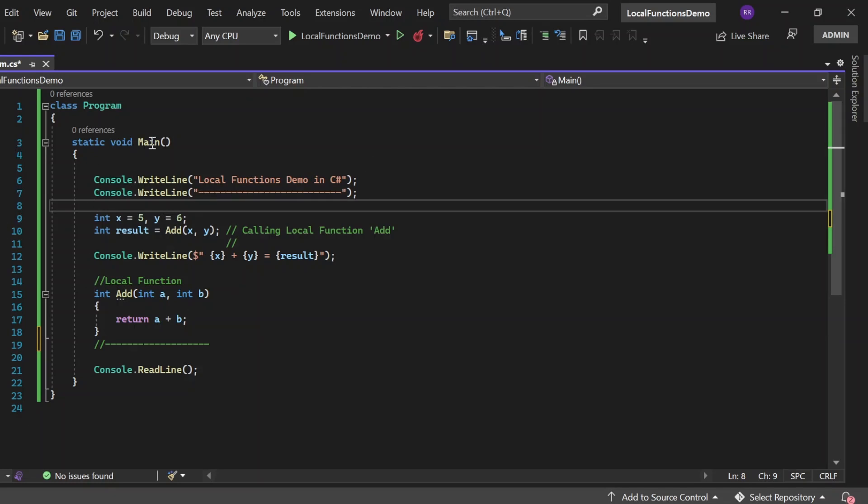And then inside this main function I've written this local function Add where I'm accepting two input parameters int a and int b, then performing the addition operation, and then returning the result of int data type.